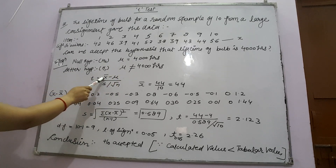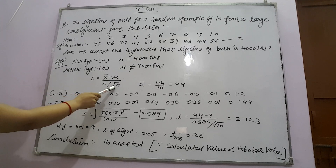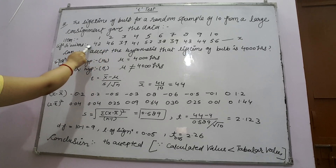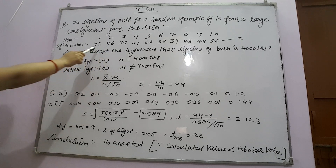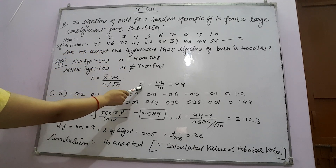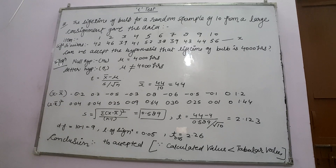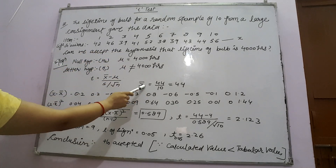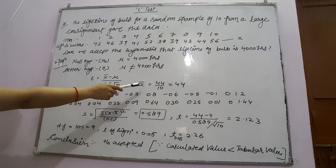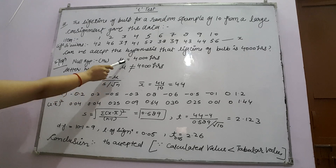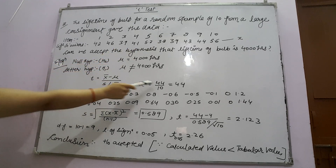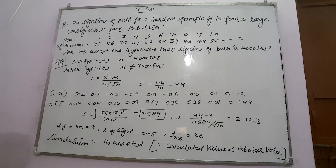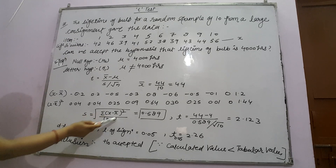The T-Test formula is: T = (x̄ − μ) / (s / √n). We first calculate x̄, which equals the summation of x divided by the number of observations. x̄ is calculated as the sum of observations divided by number of observations. So x̄ comes out to be 4.4. Now we also need to calculate s. Mu, the given lifetime, is 4000.